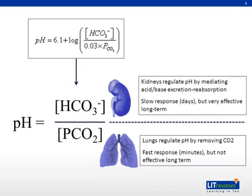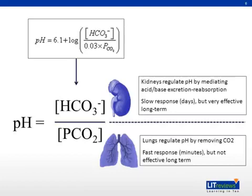The two major determinants of blood pH, as estimated by the modified versions of the Henderson-Hasselbalch equation, are sodium bicarbonate and pCO2. Note that sodium bicarbonate is in the numerator, which means that the concentration of this base is directly correlated with blood pH. That is, the more bicarbonate, the higher the blood pH, or alkalemia.